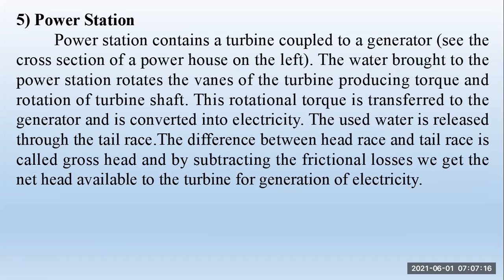Power station: The power station contains a turbine coupled to a generator. The water brought to the power station rotates the vanes of the turbine, producing torque and rotation of the turbine shaft. The rotational torque is transferred to the generator and is converted into electrical energy.